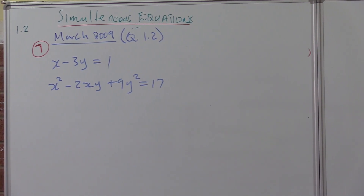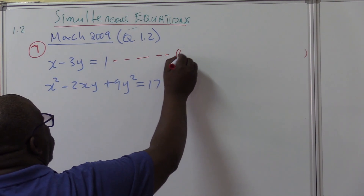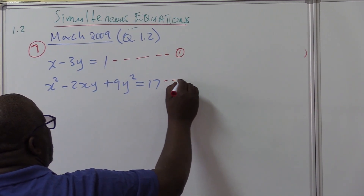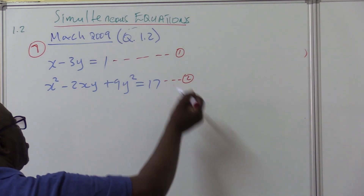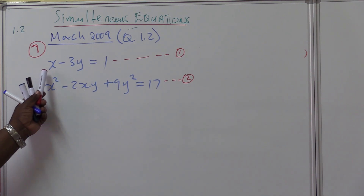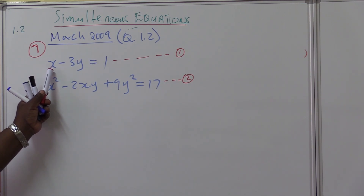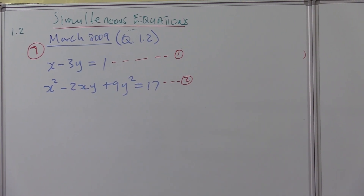What do we do first? You name those equations. Call the first one equation one and the second one equation two. When I write this I refer to equation one; when I write this I refer to equation two. The next step is you try to get rid of one variable — either x or y — and in doing so you create a third equation.